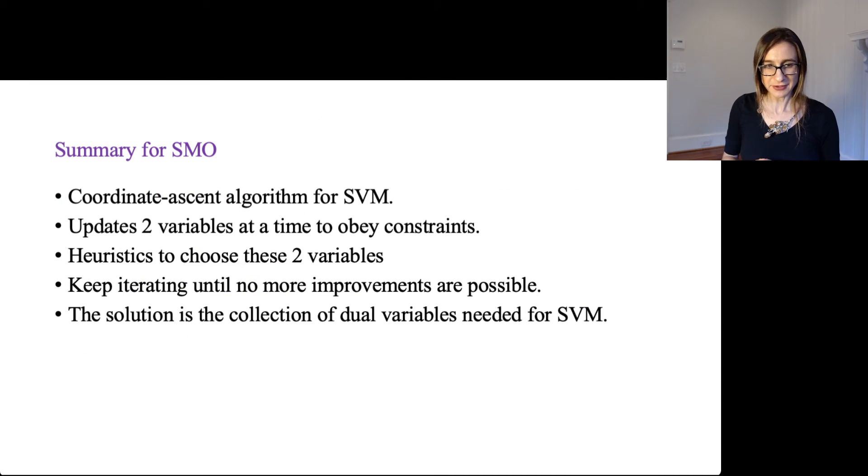So this is just a summary of SMO. It's a coordinate ascent algorithm for support vector machines. It updates two variables at a time to obey the constraints. There are heuristics to choose the order of these two variables, but it doesn't really matter because the problem is convex. And so you just keep iterating until no more improvements are possible, and then you know you've reached an optimal solution because any local minimum for a convex objective is also a global minimum because that's the nature of convex problems. And then the solution after you're done with all of it is the collection of dual variables needed for the support vector machine problem. It's the alphas. You'll get alpha star after you solve all this, and then again from alpha star you get the lambdas, and then that will give you your function that you can use to make predictions from.